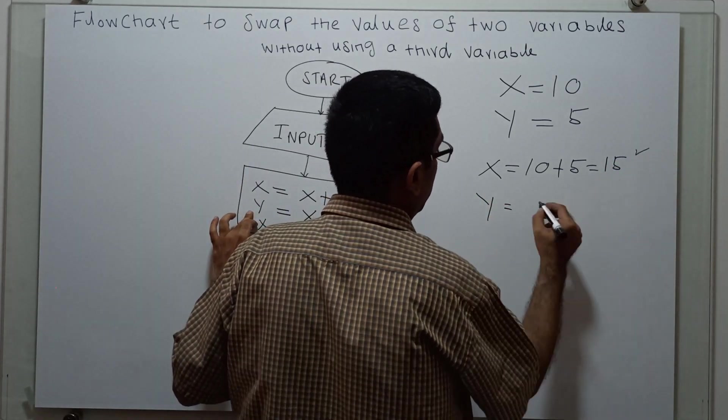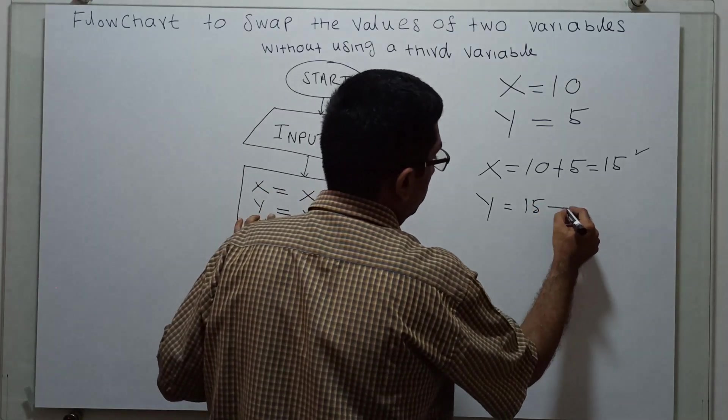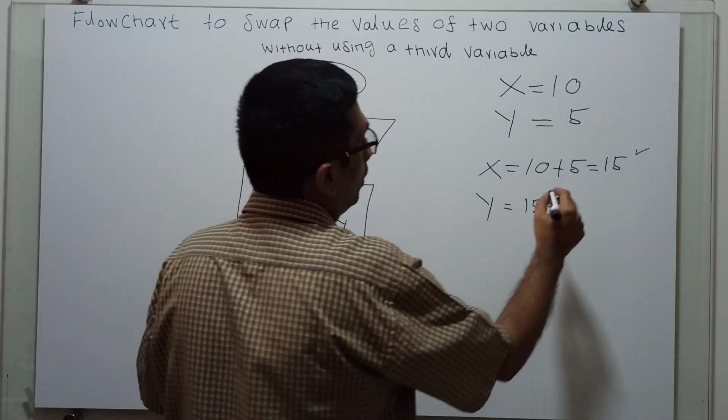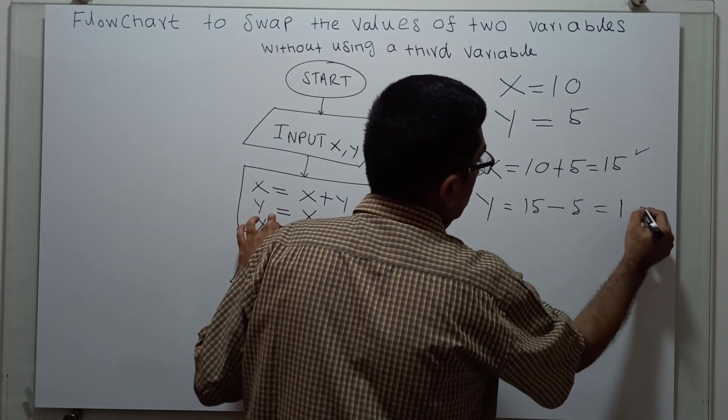Now x value is 15, so y becomes 15 minus 5, which is 10.